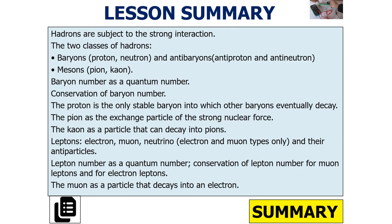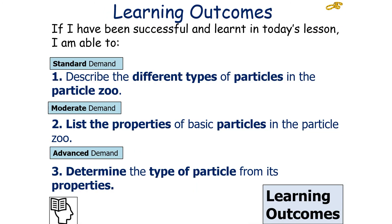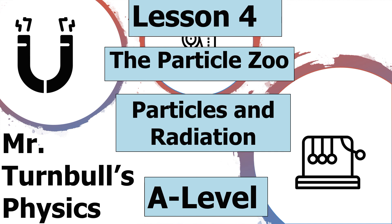To summarise today's lesson: hadrons are subject to the strong interaction and there are two classes — baryons, antibaryons, and mesons. Baryon number is a quantum number and must be conserved in a particle decay. The proton is the only stable baryon, into which other baryons eventually decay. Leptons include the electron, muon, and neutrino and their antiparticles; lepton number is a quantum number and must be conserved. The muon decays into an electron. I hope you've enjoyed today's lesson on the particle zoo in the particles and radiation topic for AQA A-level physics. Thank you very much for listening and have a lovely day.